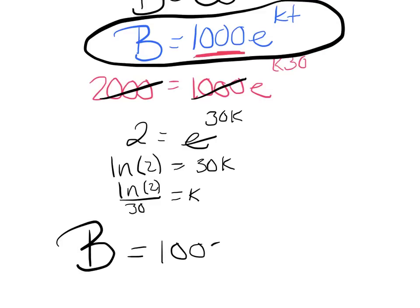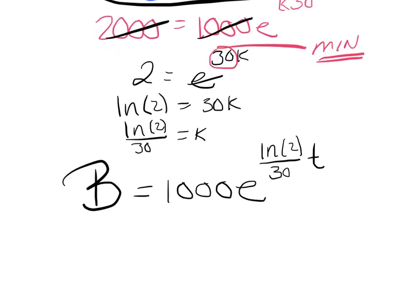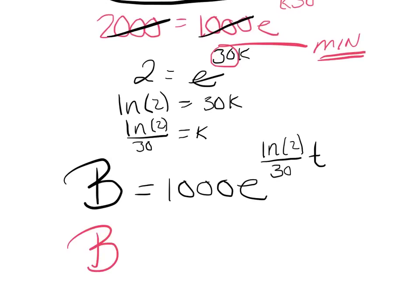So I'm going to substitute that into my equation. B equals 1,000e^(ln(2)/30 times t). And the question said how much bacteria will there be in 2 hours? Well, the only thing I have to catch is that this 30 was actually in minutes. So I can't just plug 2 hours in. I would have to use 120 minutes.